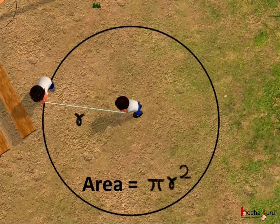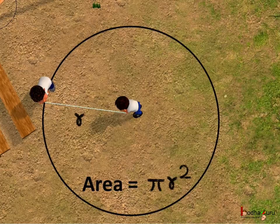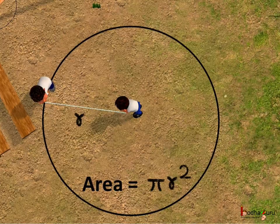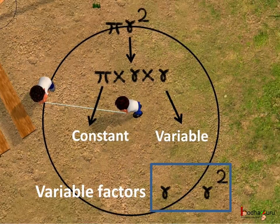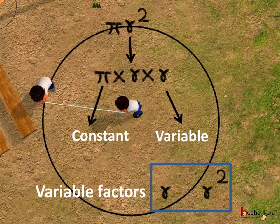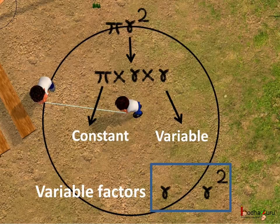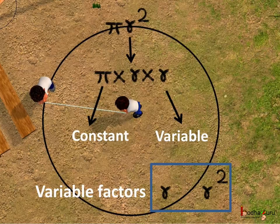We have already learned about exponents, and many algebraic expressions have variables with exponents. For example, the area of a circle with radius r is represented by the algebraic expression π multiplied by r squared. πr² is a monomial expression as it has a single term. Here, π is a constant whose value is 22/7, and r is a variable. So r, r², etc. are the variable factors.